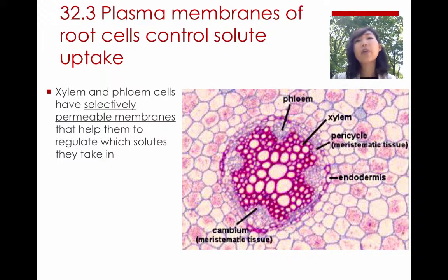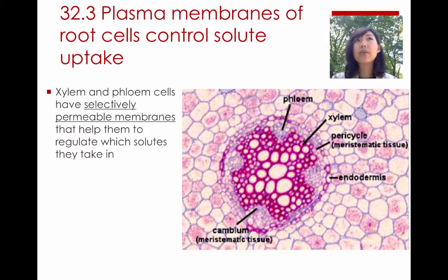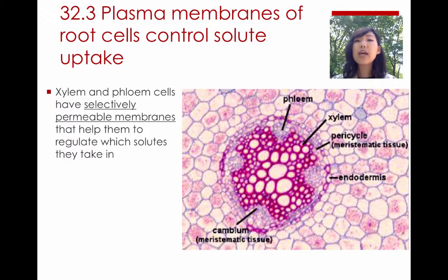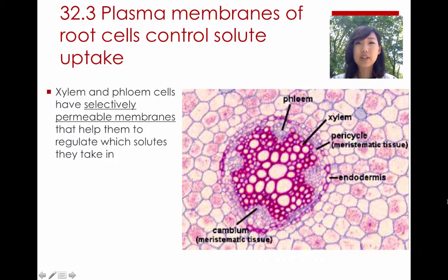You might wonder how xylem and phloem decide what to allow to enter into their cells — how they can be so selective. Remember that all cells have selectively permeable membranes. Xylem has certain membranes that will specifically take in water and certain nutrients that the plant needs from the roots, while phloem concentrates on food.